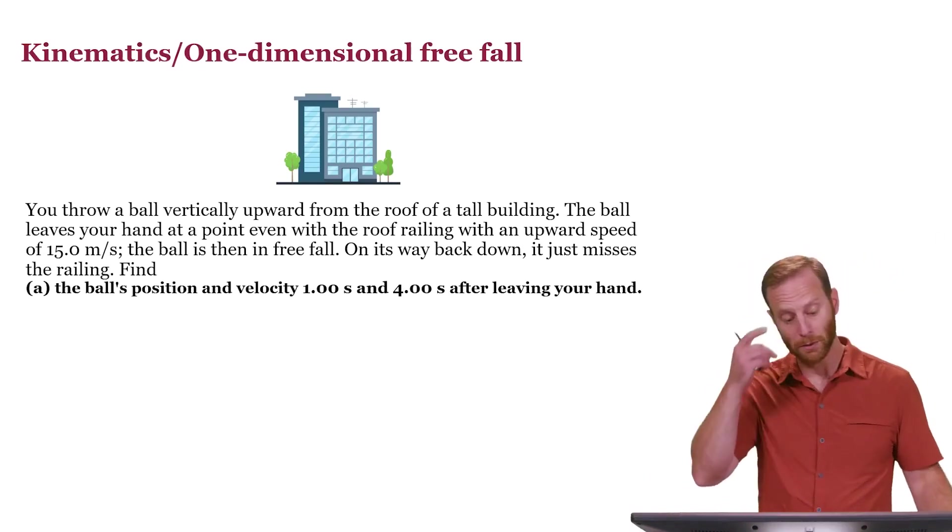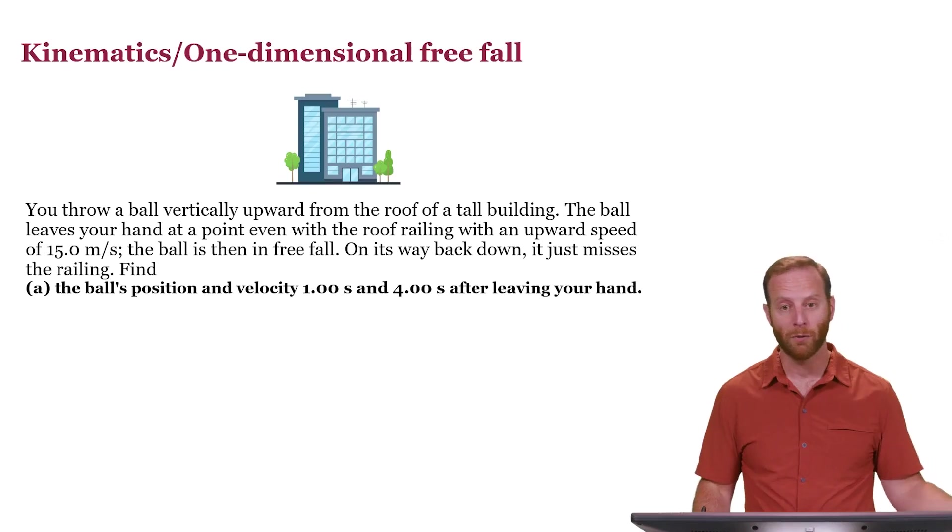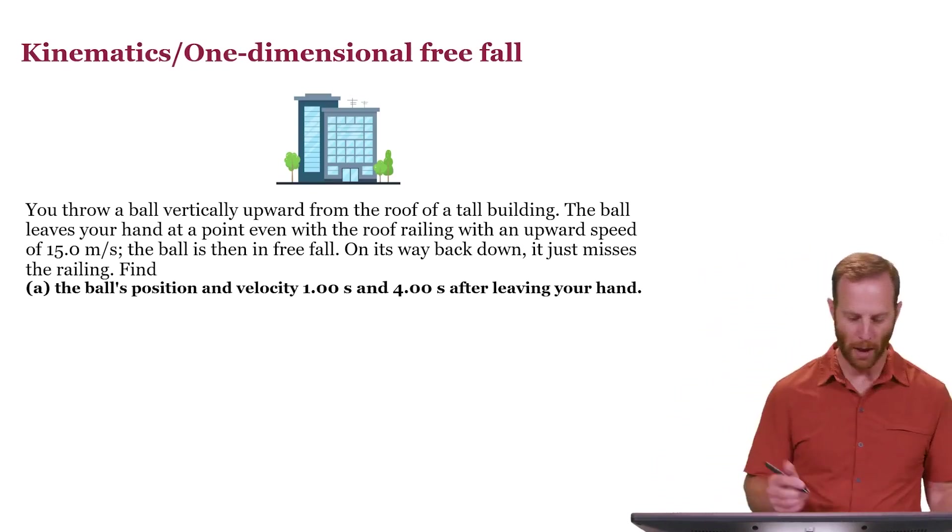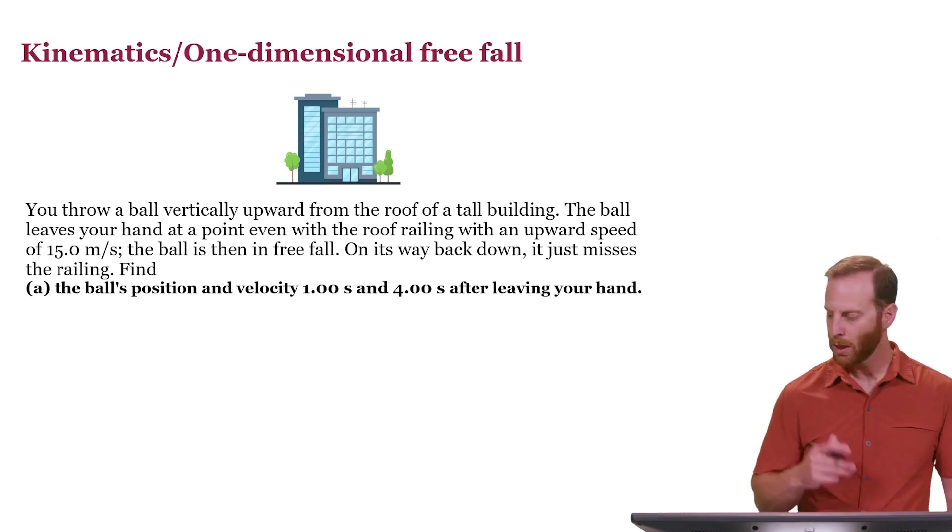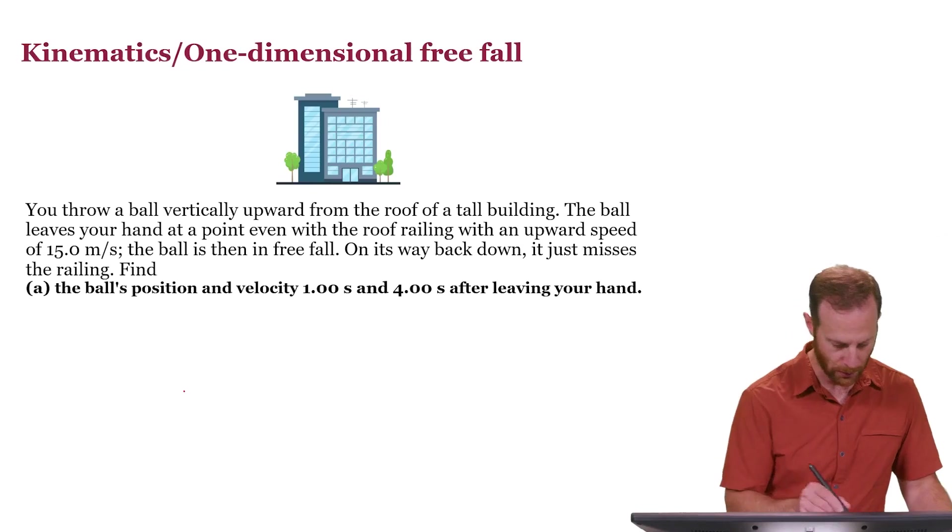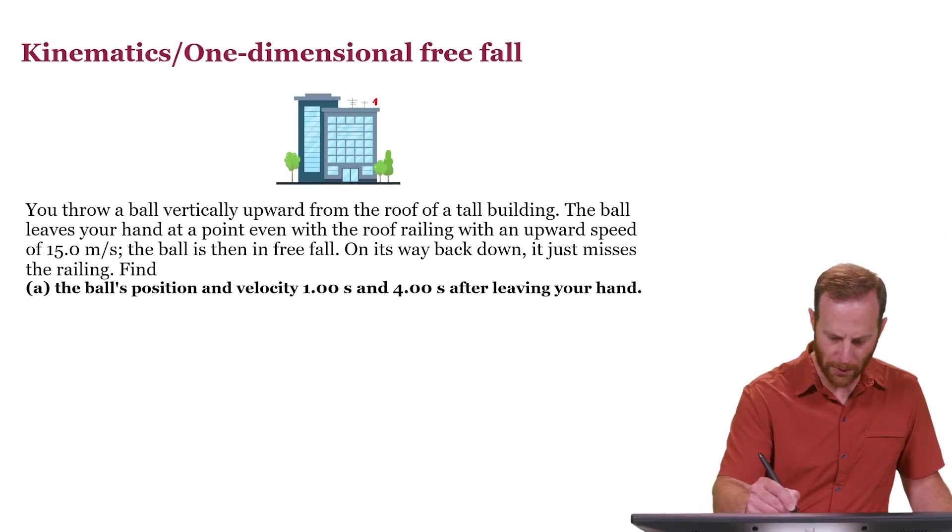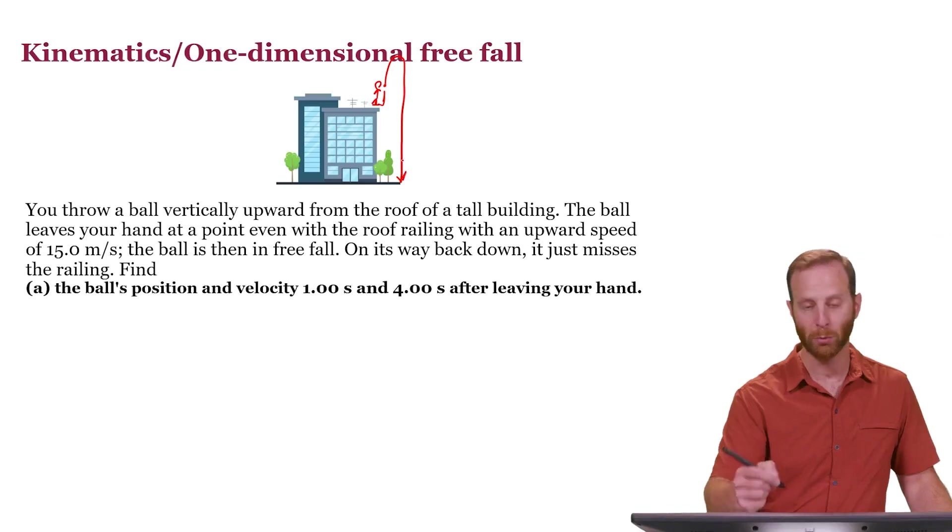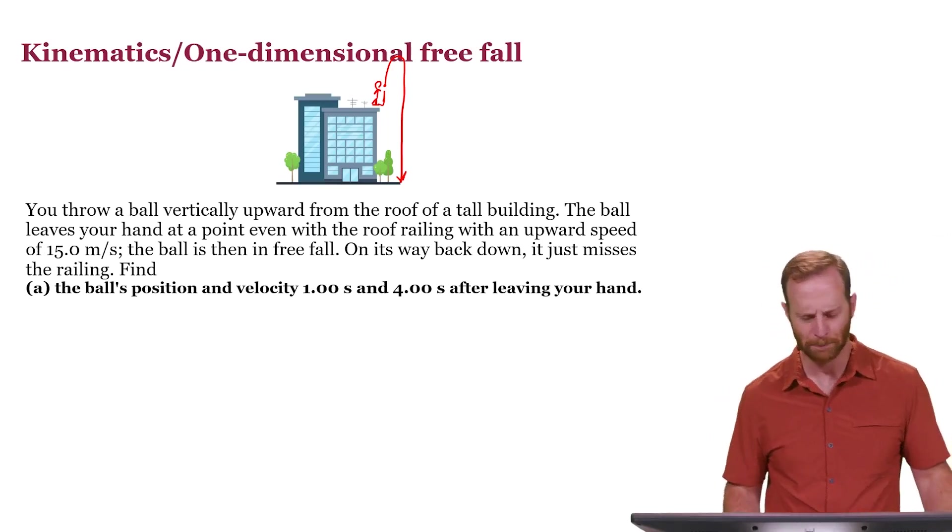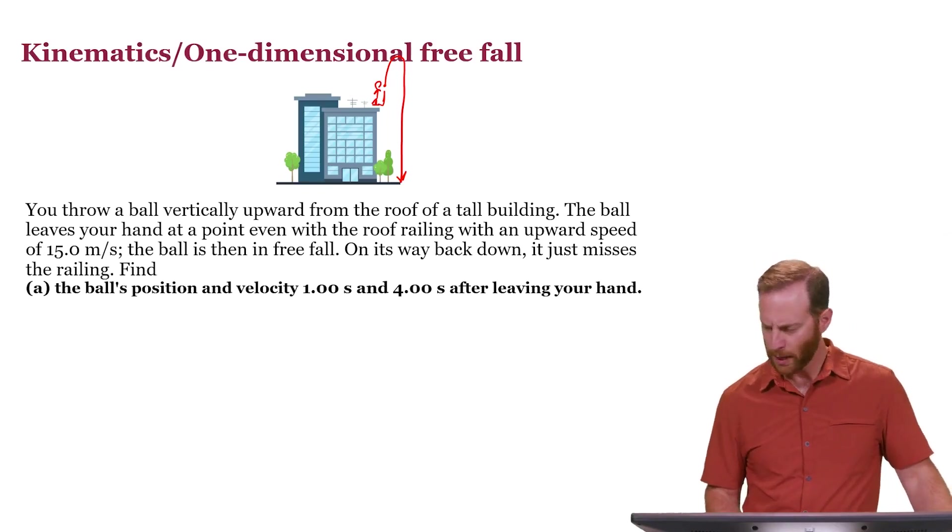The first part is to figure out the ball's position and velocity one and four seconds after leaving your hand. So let's think about what a good strategy for a problem like this would be. The first thing is we should draw a picture and there is sort of one already here for us to use. So you're up here at the top of this building and there's the railing and you've got the ball that you're going to throw up. It's going to go up and come back down presumably. We don't know how tall the building is but we know at least how fast it left your hand.